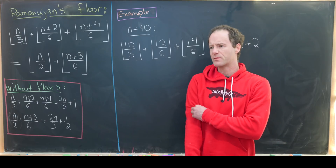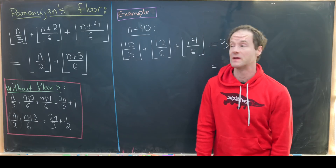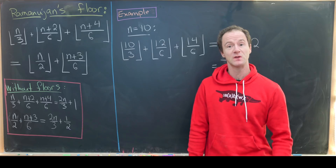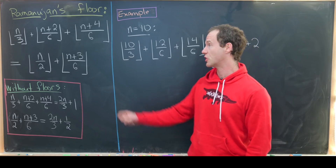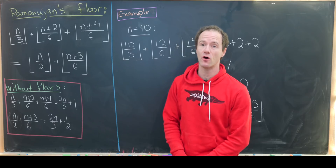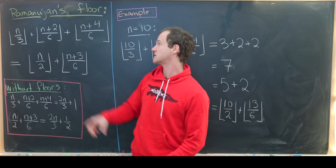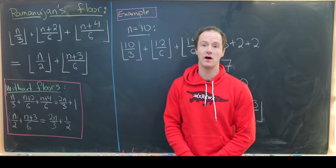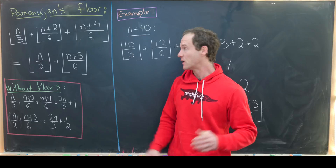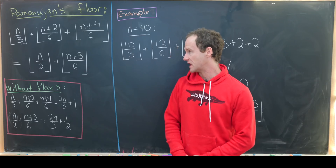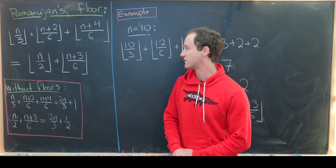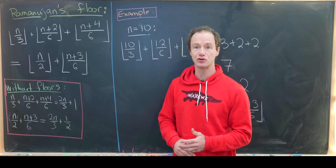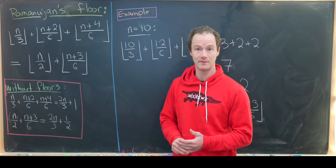In some previous videos I proved some of Ramanujan's famous floor formulas. We're going to prove another one today. In particular, we will show that the floor of n/3 plus the floor of (n+2)/6 plus the floor of (n+4)/6 is equal to the floor of n/2 plus the floor of (n+3)/6, and this is going to be true for all integers n.